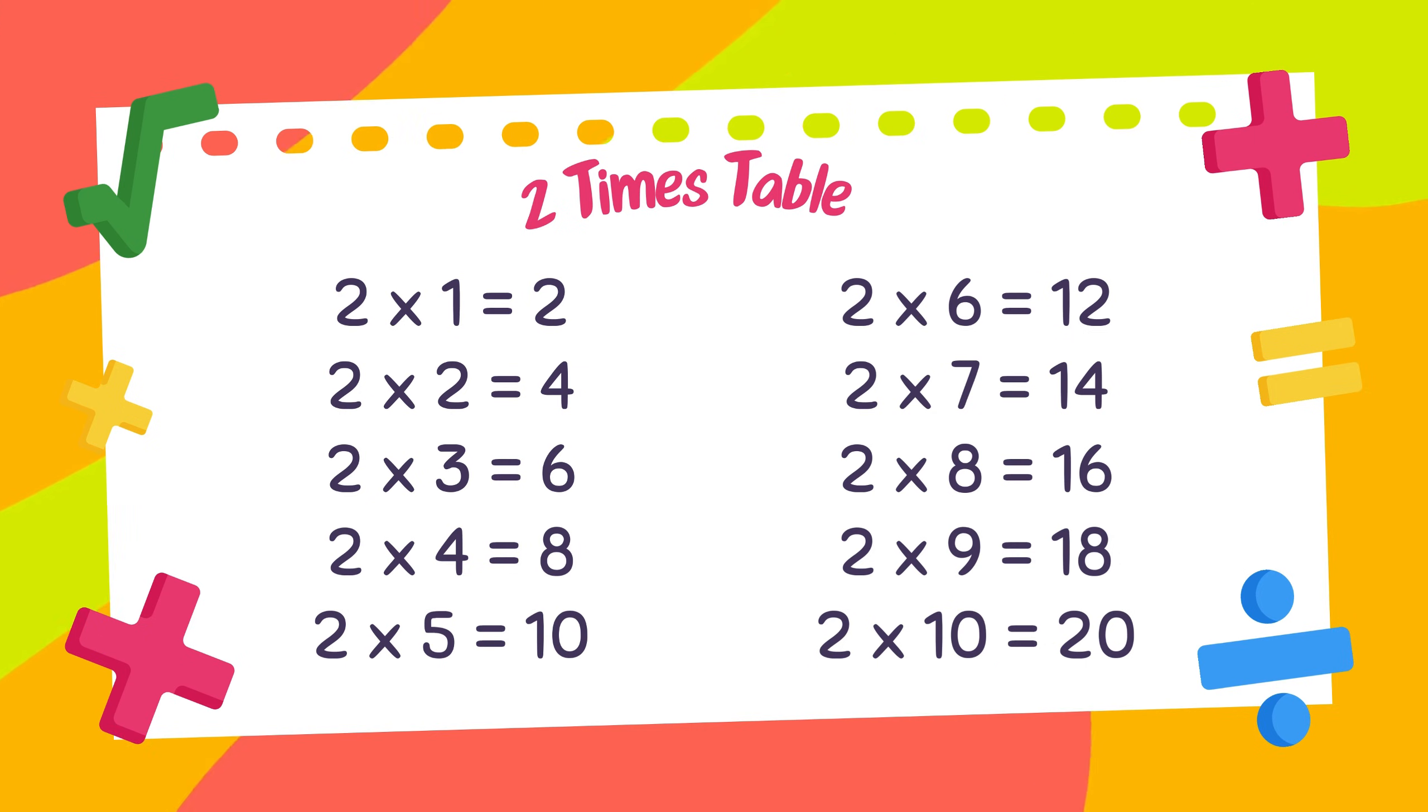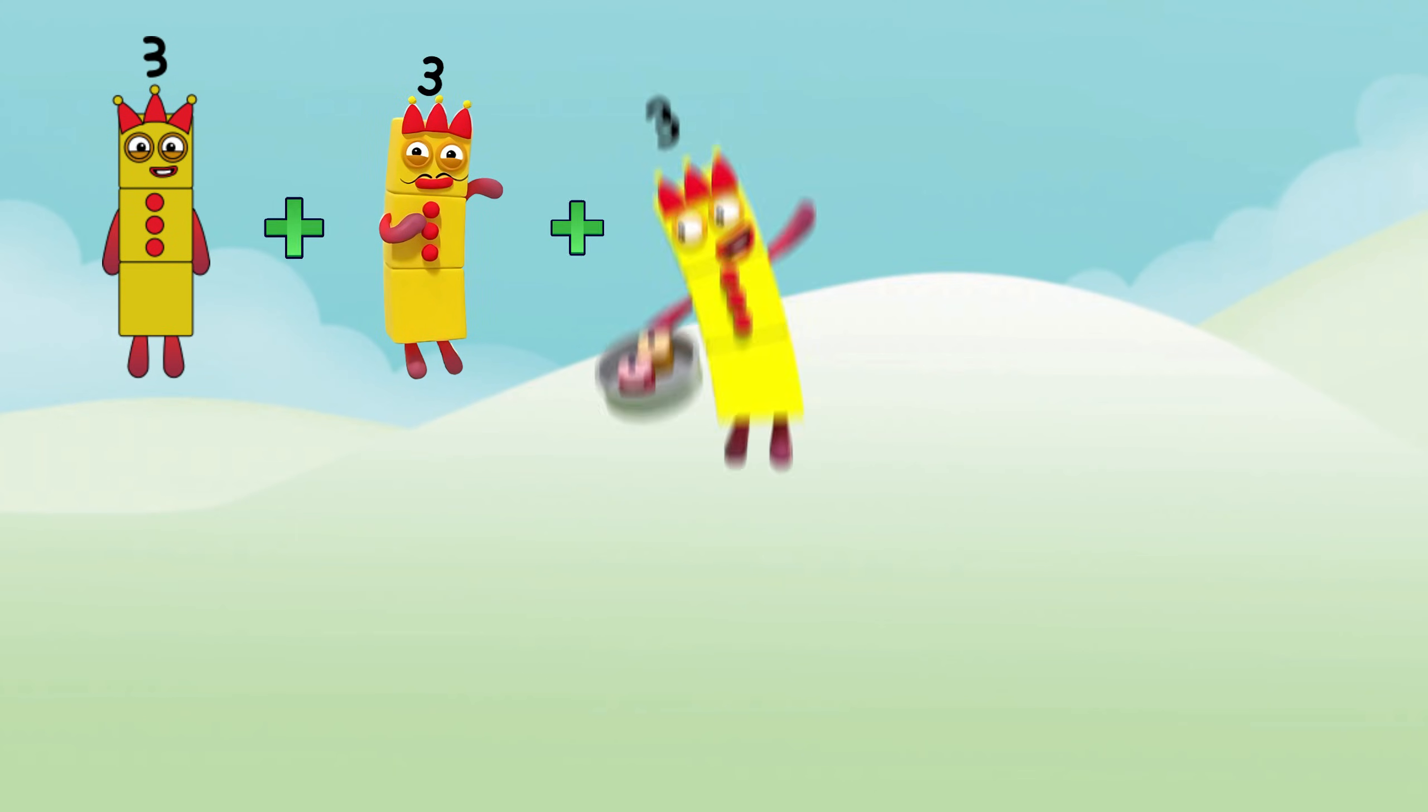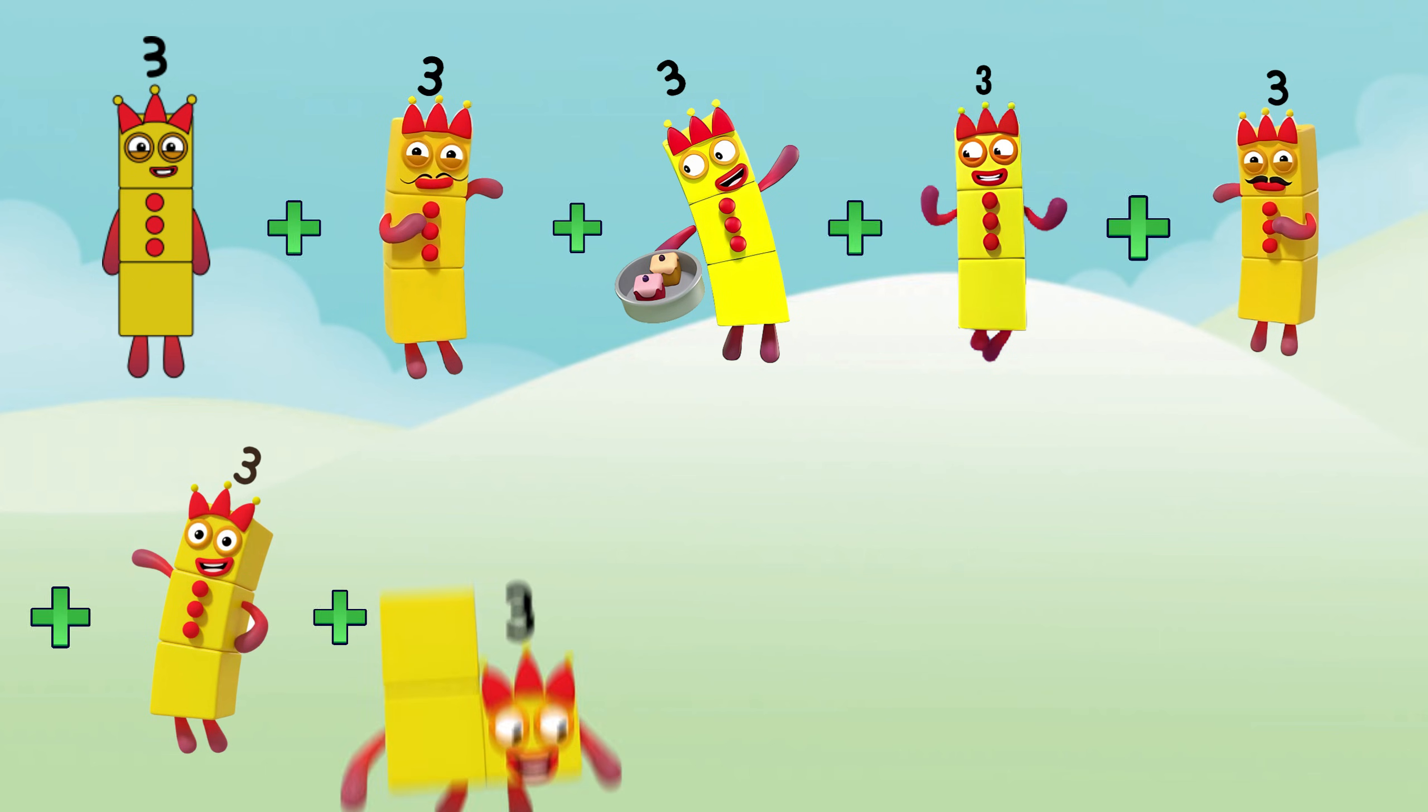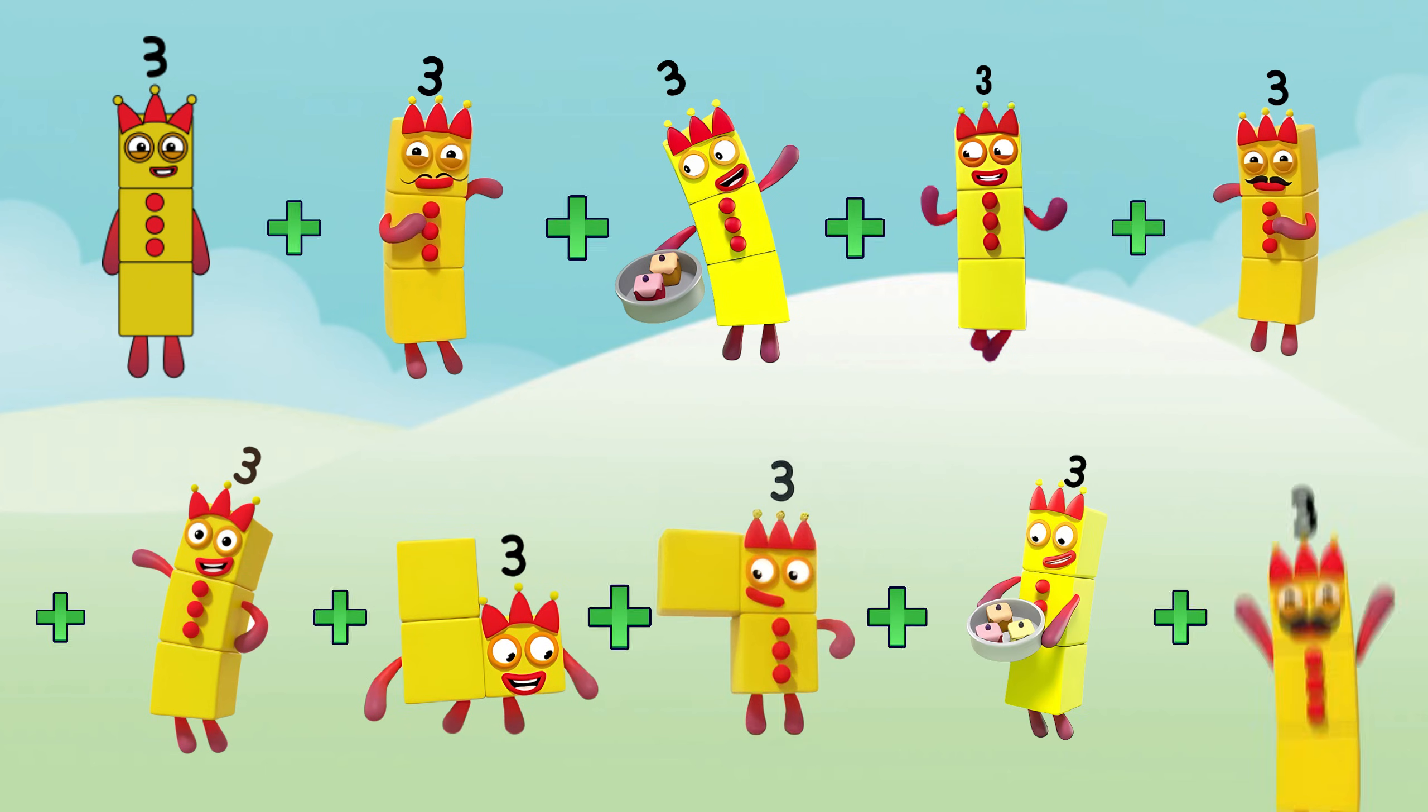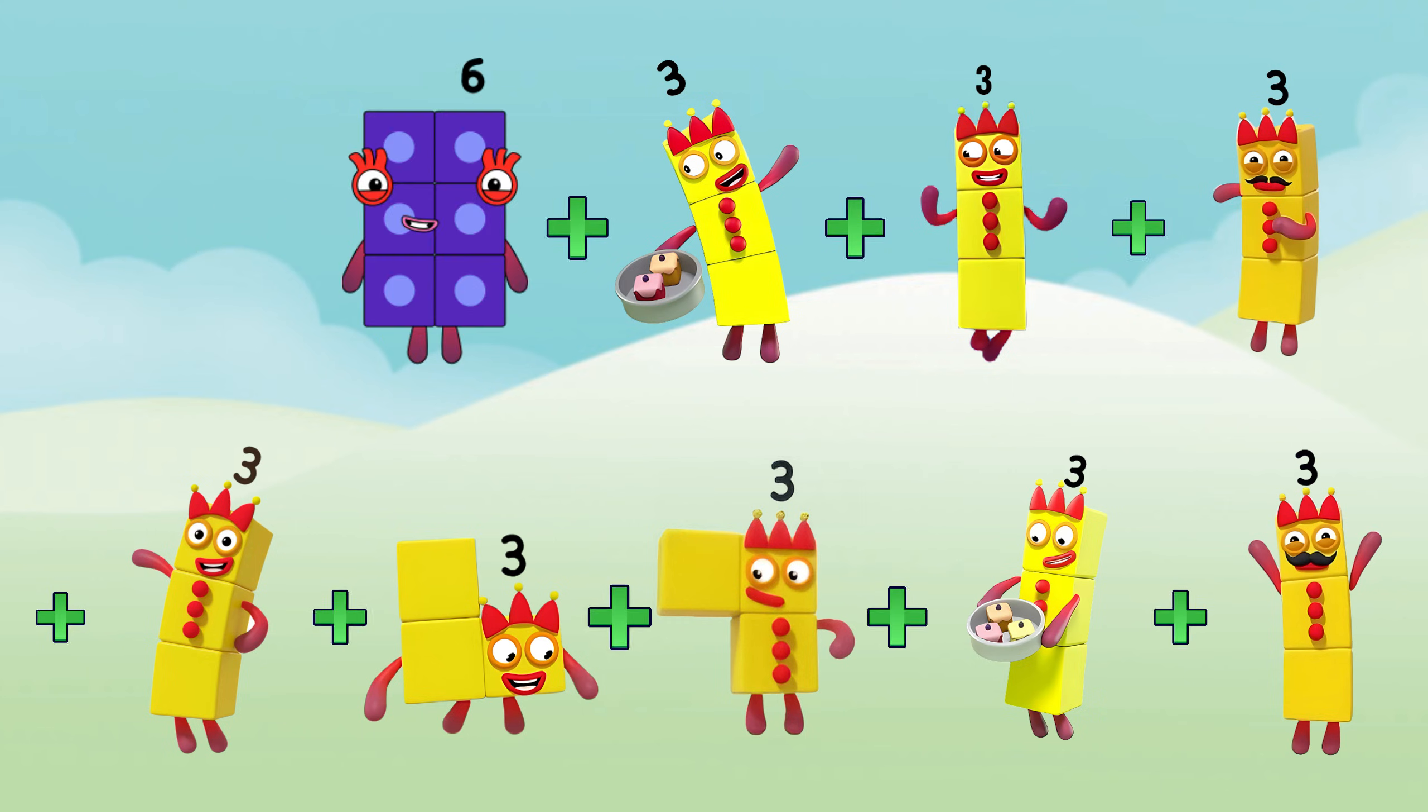Let's see how we made our two times table. Now, do the same with three by using repeated addition. We made a three times table. Three plus three is six.